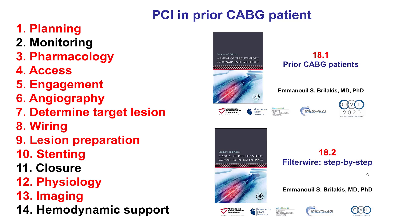Performing angiography and PCI in previous coronary bypass graft patients has several particular points related to planning — for example, knowing the anatomy before the procedure. In terms of access, femoral access may facilitate graft engagement, but it can be achieved pretty well through radial access, especially left radial. Using the right catheters for engagement — AL-1 for left-sided grafts — and determining the target lesion, which was the SVG lesion to the obtuse marginal branch. When it comes to wiring, ideally a protection device should be used, followed by stenting and imaging to optimize the result.